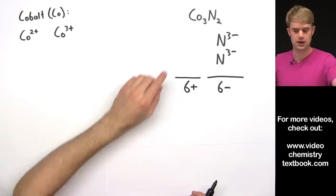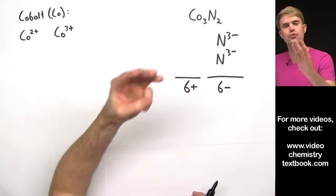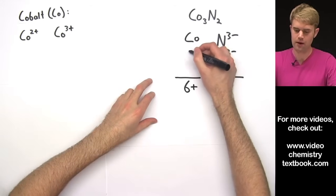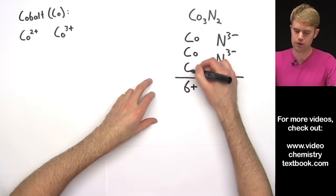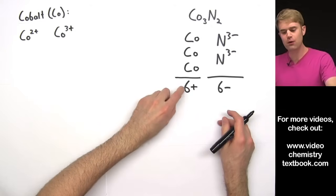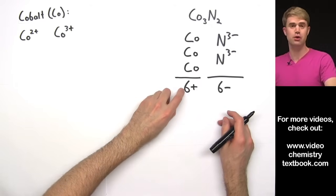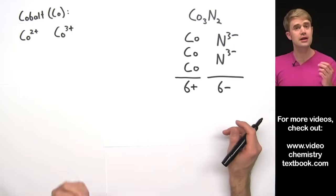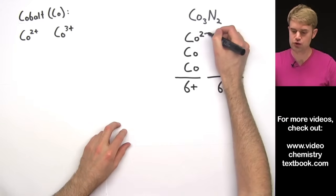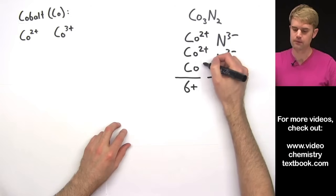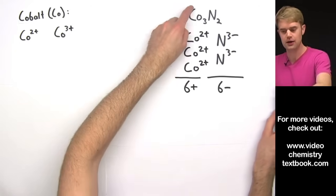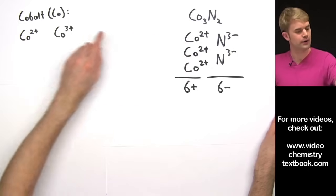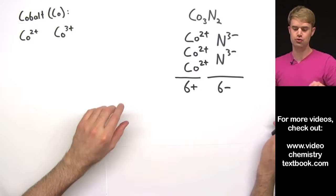Now for cobalt, Co, we have 3 of them. Let me draw them in here. 1, 2, 3. So how are we going to divide up this 6+ amongst the 3 cobalts? We'll do it so that each one of them has 2+ of charge. And that means that in this chemical compound, cobalt has a charge of 2+.